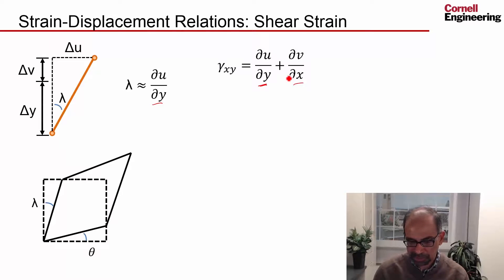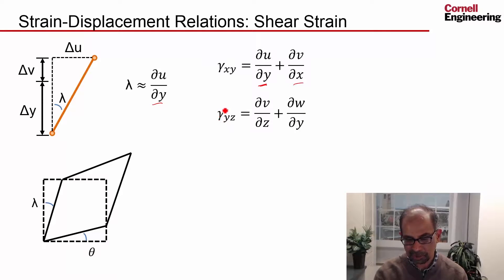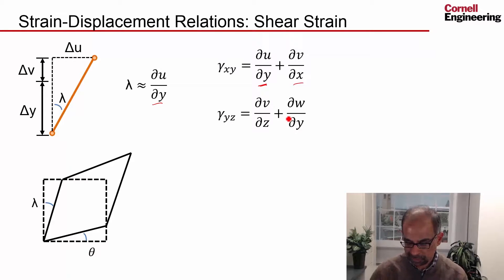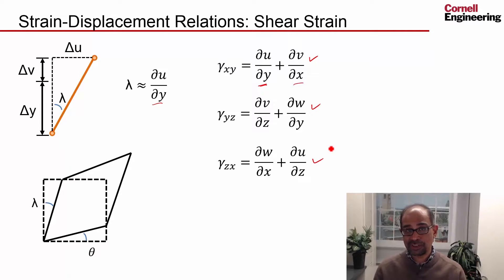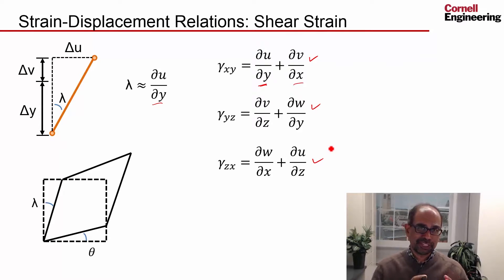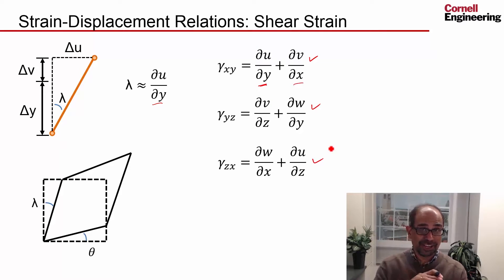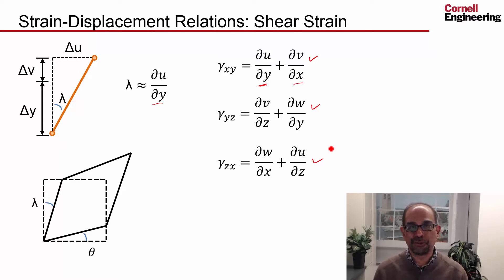Similarly, I'll get a corresponding expression for the engineering shear strain in the yz-plane, and in the zx-plane. This gives me three additional relations when I consider the shear strains, but no new variables are introduced, so that closes the equation set. These derivations have a lot of overlap with the derivations in big ideas in fluids — one main difference is that in fluids one talks about strain rates, because a fluid particle deforms continuously when you apply a force on it.